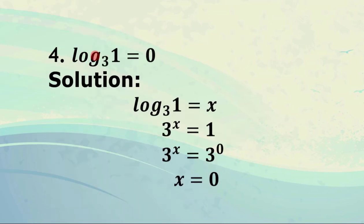Moving on to number 4: log of 1 to the base 3. We let that equal x, then 3 raised to x equals 1. What expression with base 3 raised to some exponent gives us 1? Obviously 3 raised to 0 equals 1. So 3 raised to x equals 3 raised to 0, and x equals 0.